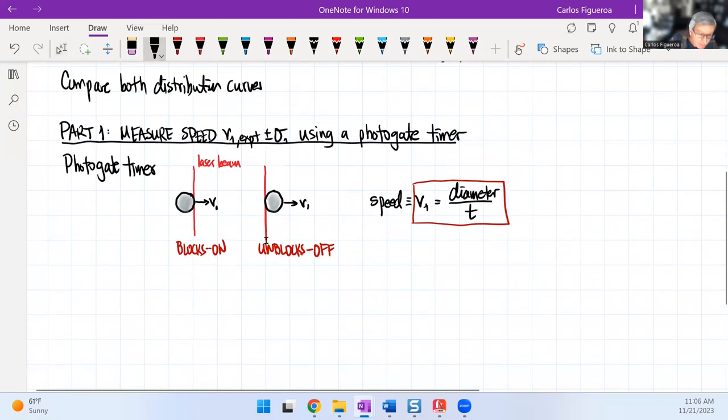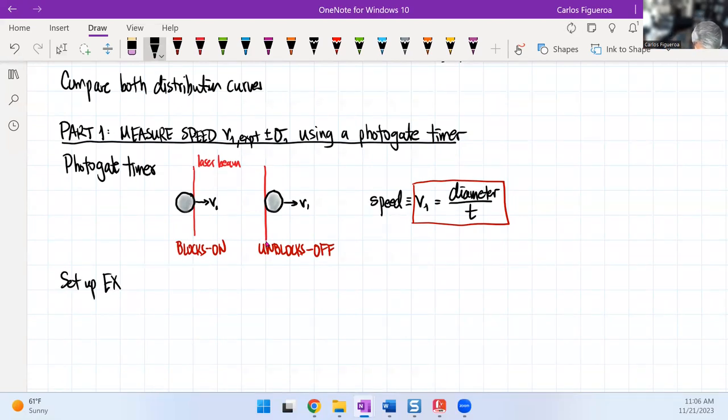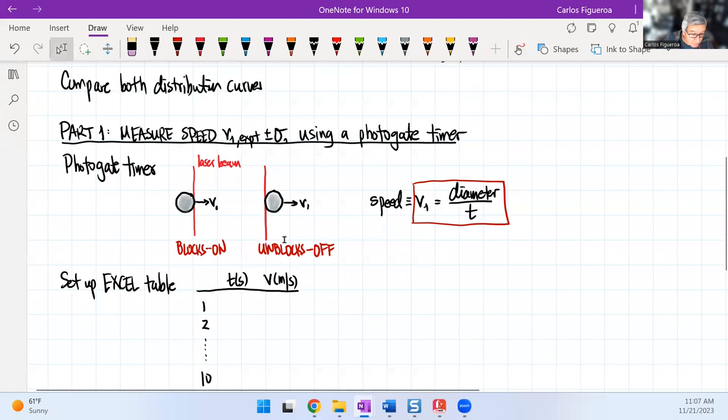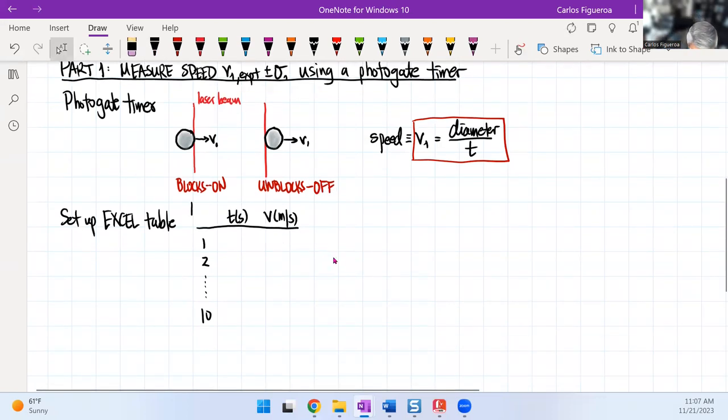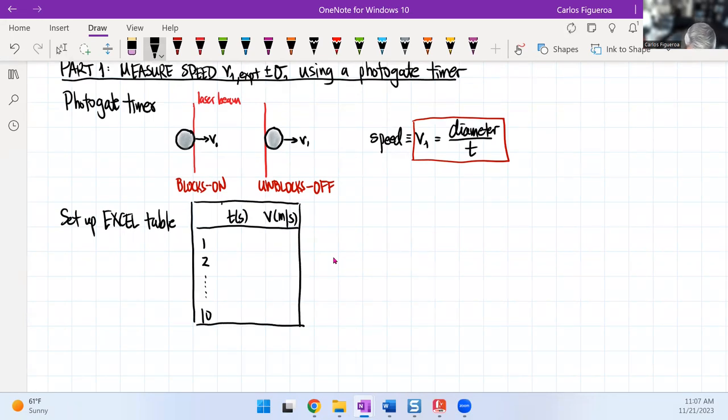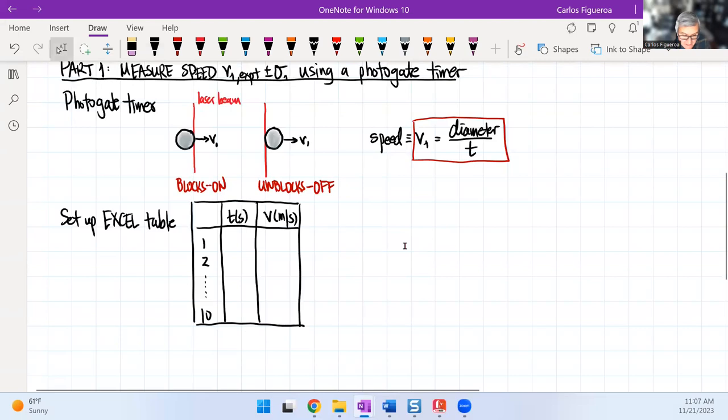So what do I want to do here? Set up an Excel table. Or a spreadsheet table, it doesn't really matter. And when you set it up, you're going to make 10 measurements. And from here, you're going to measure the time, and then you're going to transfer the time to a speed. And remember, you've got to show me that first calculation.